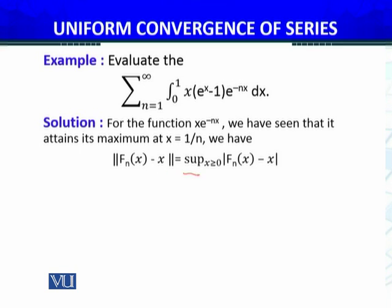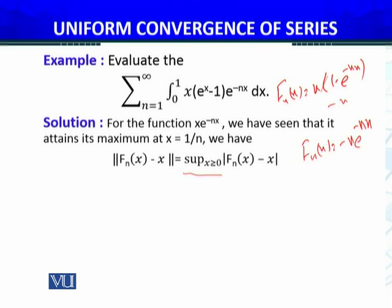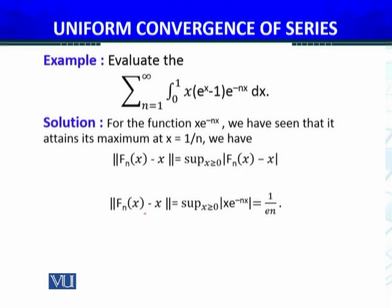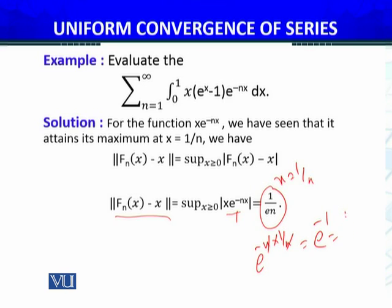I consider the norm — the supremum over x ≥ 0 of |f_n(x) - x|. Since f_n(x) = x · (1 - e^(-nx)), subtracting x gives -x · e^(-nx). The supremum of |x · e^(-nx)| is attained at x = 1/n. Substituting x = 1/n gives (1/n) · e^(-n · (1/n)) = (1/n) · e^(-1) = 1/(en).